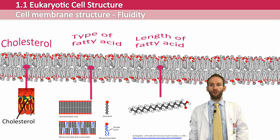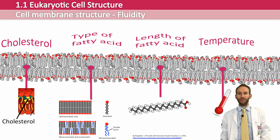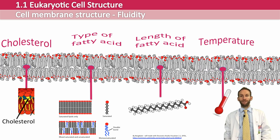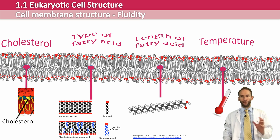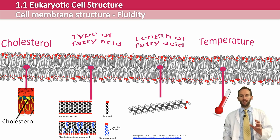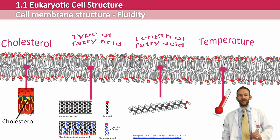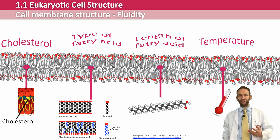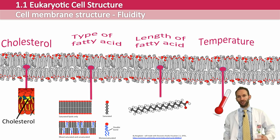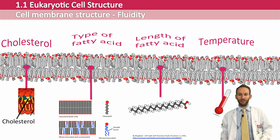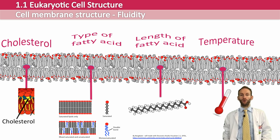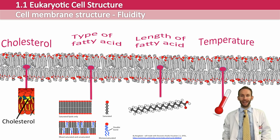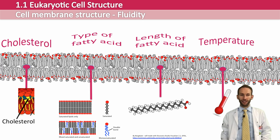Temperature has a massive role to play in the fluidity of the membrane. If you increase the temperature, the molecules start moving around more, the phospholipids start moving around more, and more gaps get created. Proteins then start to denature as the temperature gets higher, and eventually lipids will melt and the whole membrane will break down. Membrane permeability also varies depending on similar factors.